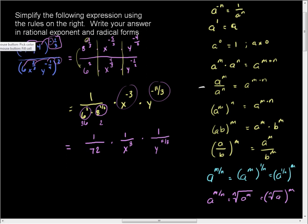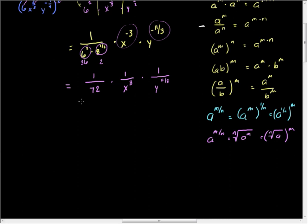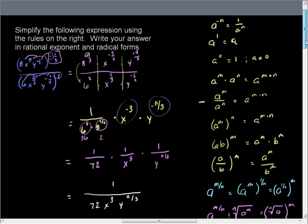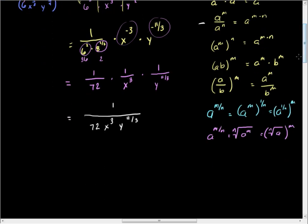At this point, I can go ahead and combine these all together, so that I have 1 over 72 x to the third y to the eleven-thirds. And as far as the first part, you're finished. The first part of the question said, write your answer in rational exponent and radical forms. Well, it is in rational exponent form.